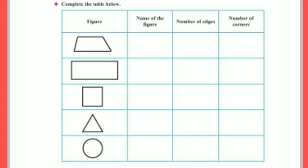In the third column write the number of edges, and in the last column write the number of corners.